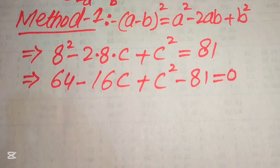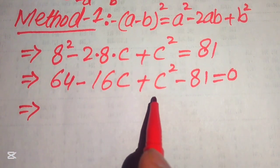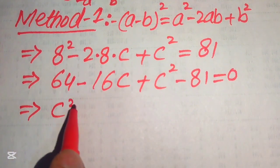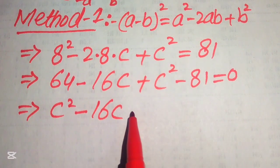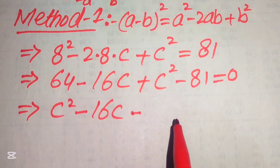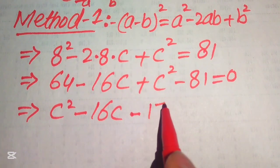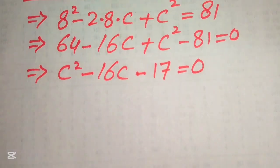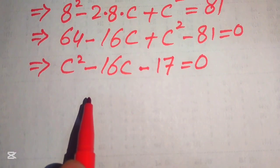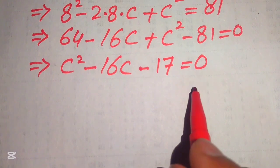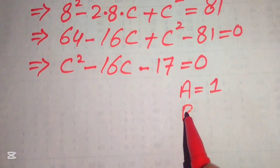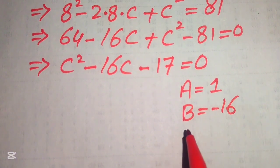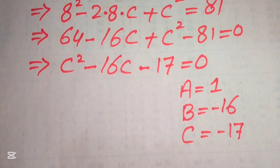Collecting and rearranging the like terms, we write C squared minus 16C, and subtracting these values we get minus 17, so the whole equation equals zero. This equation is quadratic in C, so we can apply the quadratic formula. The coefficients are: capital A equals 1, capital B equals minus 16, and capital C equals minus 17.